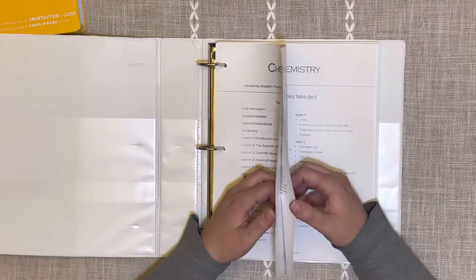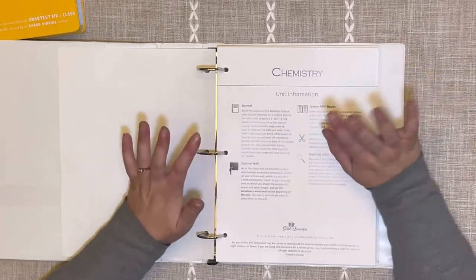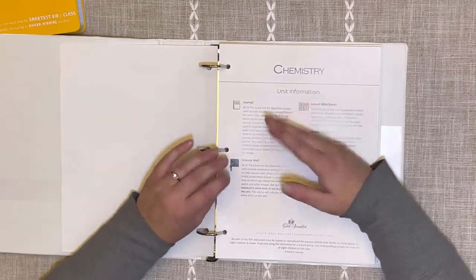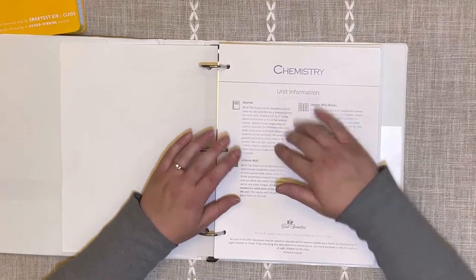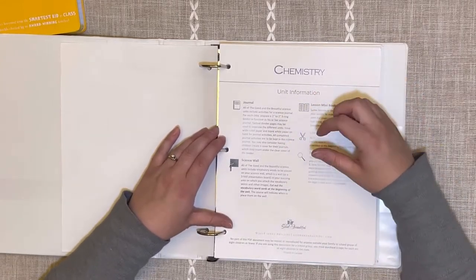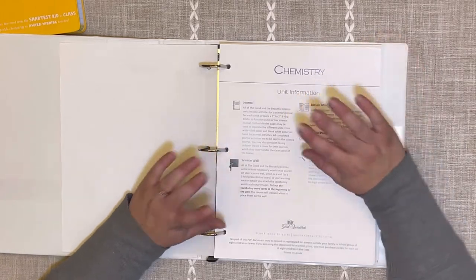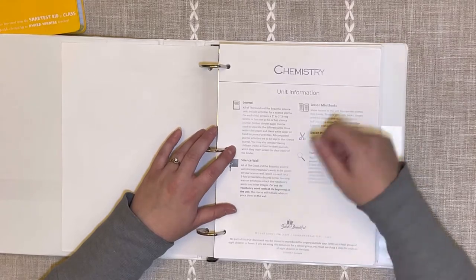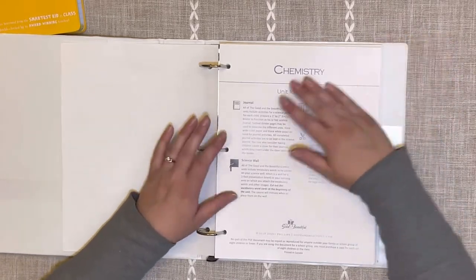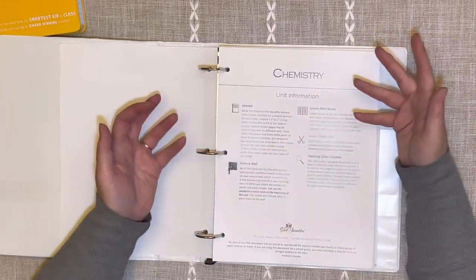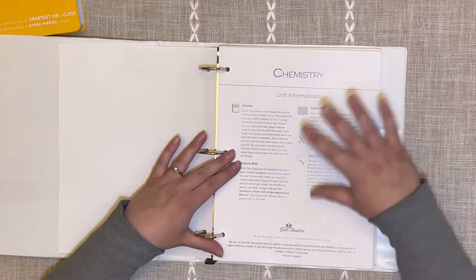The first thing I want to show you is the unit information. They give you ideas for a science journal for all of their unit studies. This tells you about the journal, their recommendations on preparing a one inch to two inch three ring binder, having tab dividers. They also have a science wall with vocabulary wall cards at the beginning of the unit. We cut them out and put them all on the wall so they are visible all throughout our day and throughout our main lesson block.